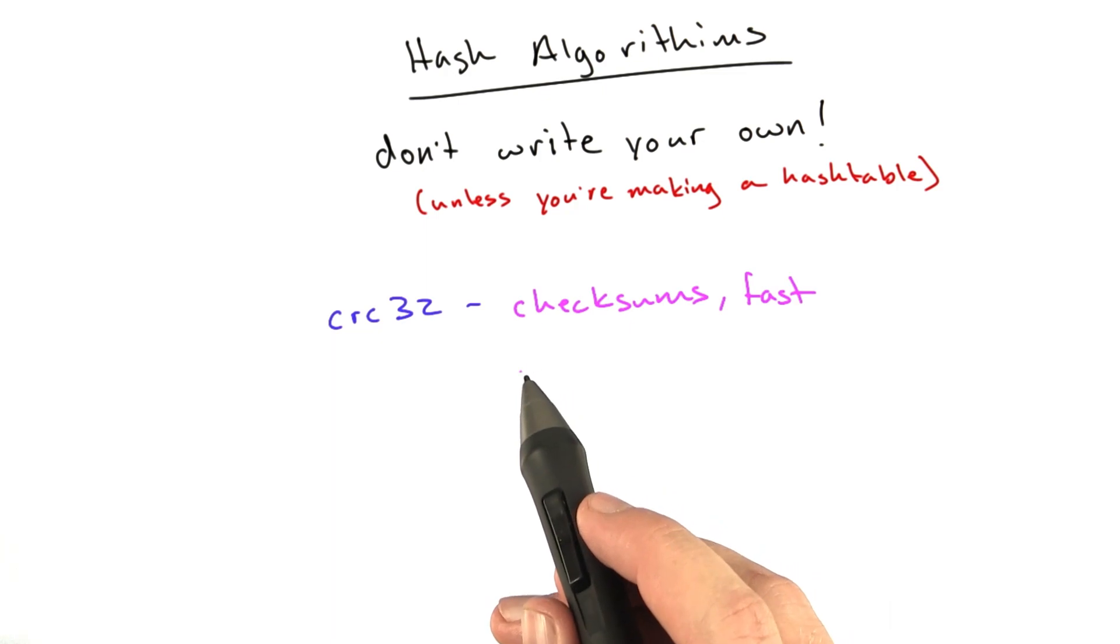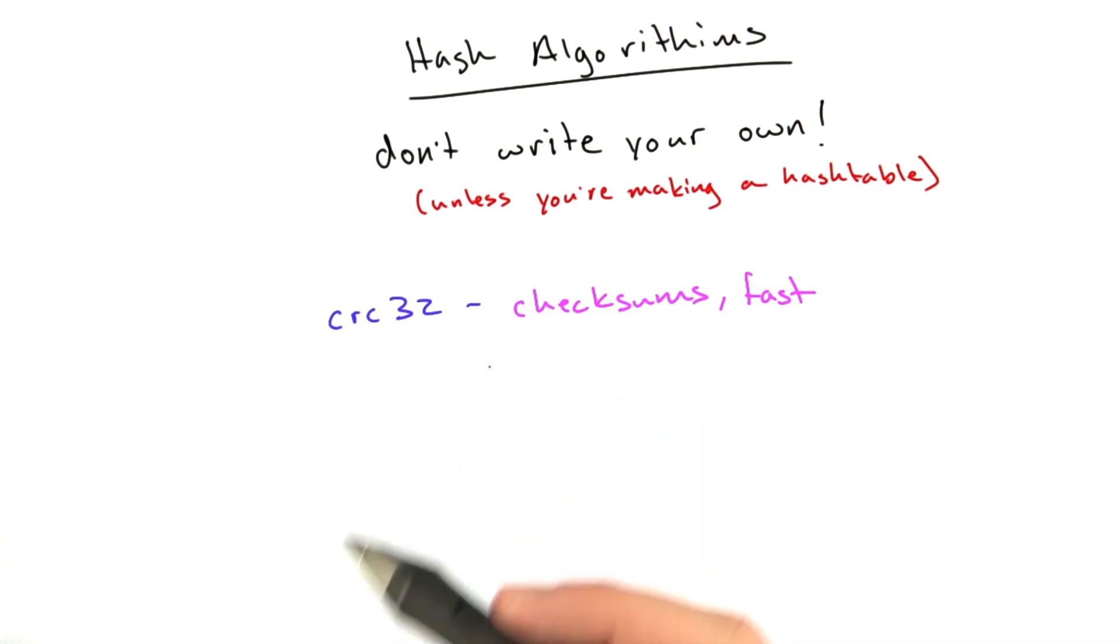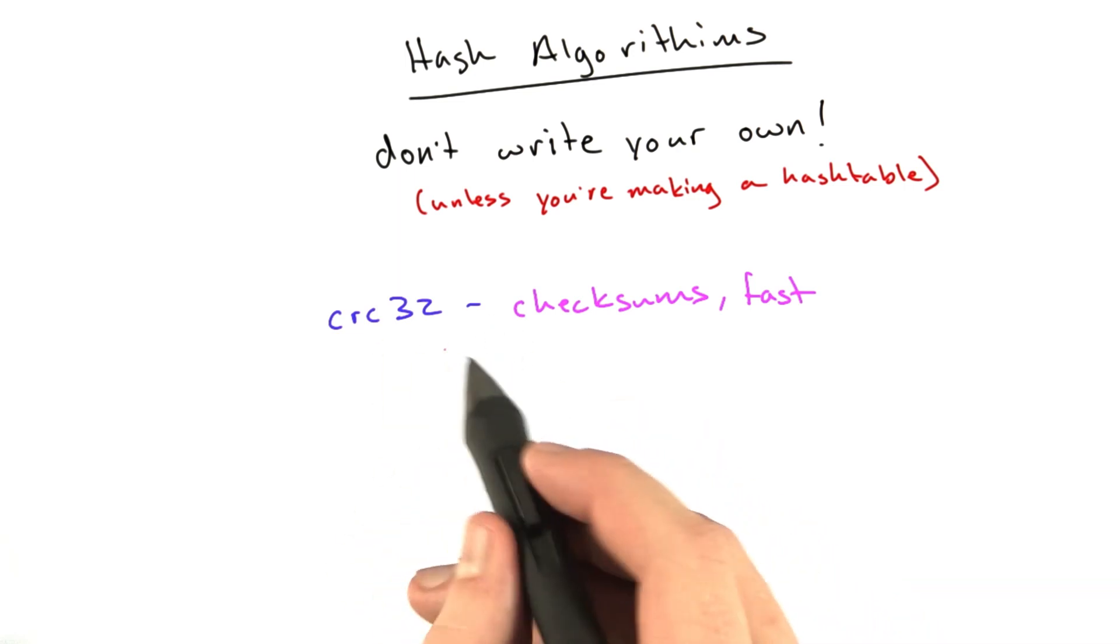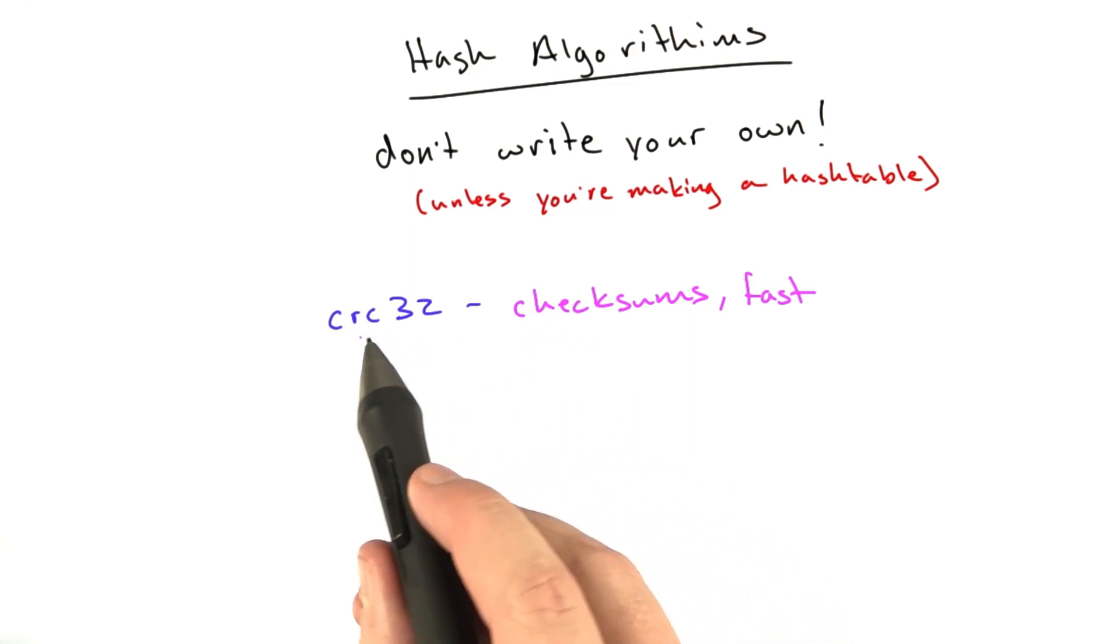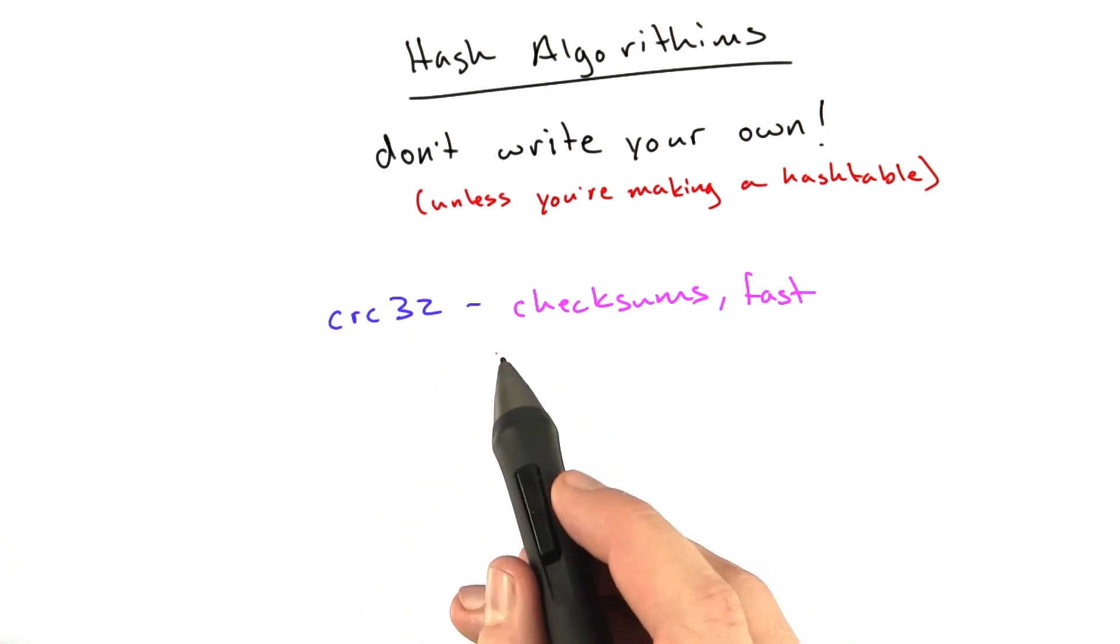You can verify that the file you received has the same CRC as the file they sent, and then you don't have to verify bit for bit that you have the correct file. CRC is really fast. Its only purpose is doing checksums, basically creating a hash of a large file. Its security properties are not very good.